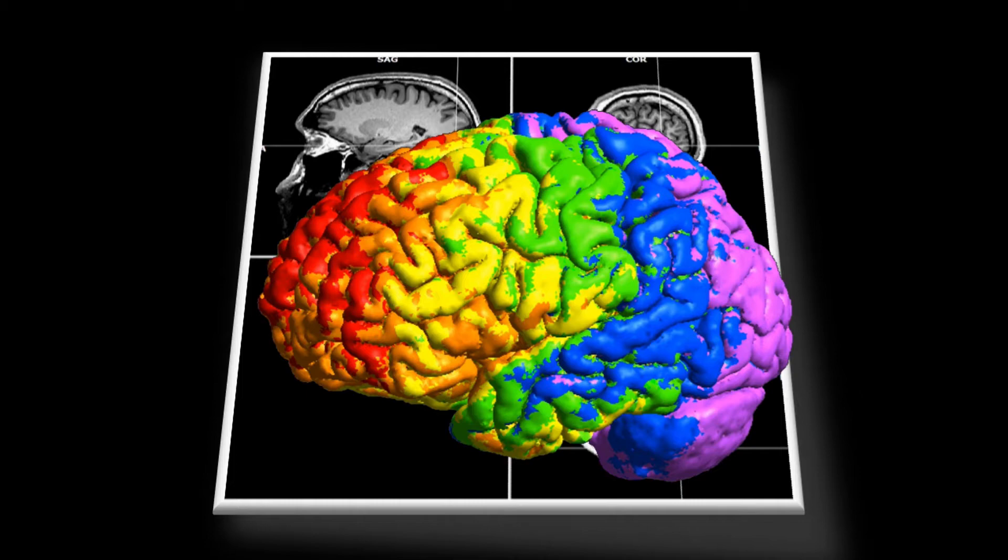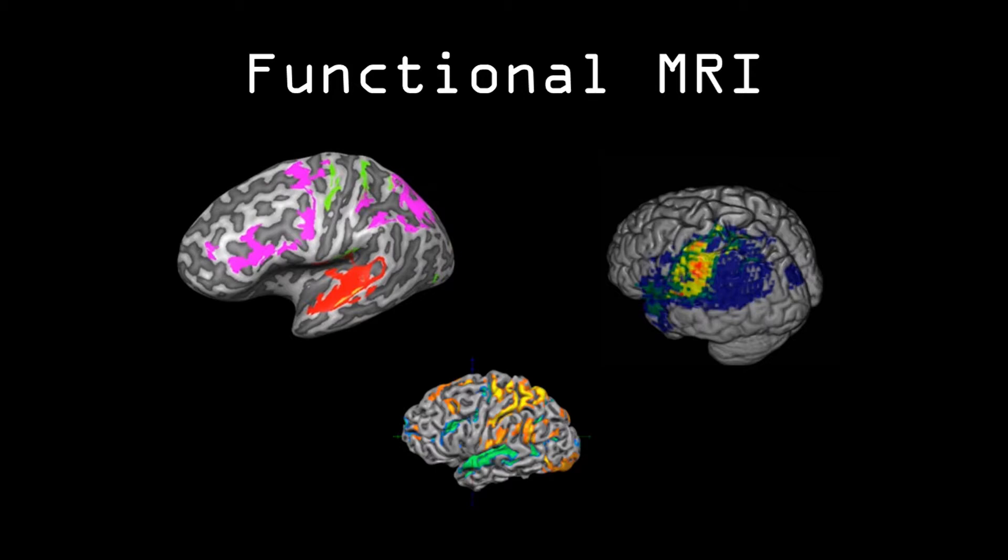Using a functional MRI scan, active regions of the brain can be identified yielding some fancy pictures. So, how does it work?